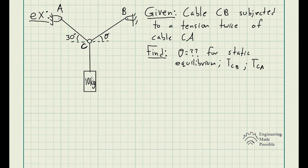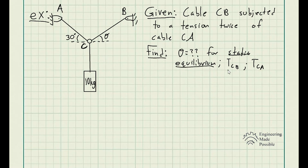We have a 10-kilogram cylinder hanging from a cable, with cables CA and CB. These points are our restraints. When it comes to cables specifically, they will always be in tension and cannot be compressed, so the forces in the cables are referred to as tension. The problem states that cable CB is subjected to a tension twice that of cable CA. We need to find the angle theta for static equilibrium, as well as the tension in cable CB and the tension in cable CA.